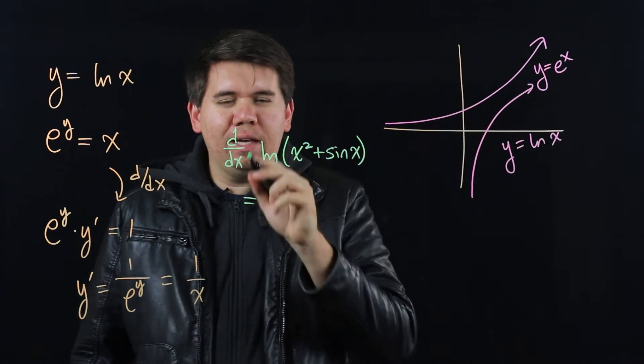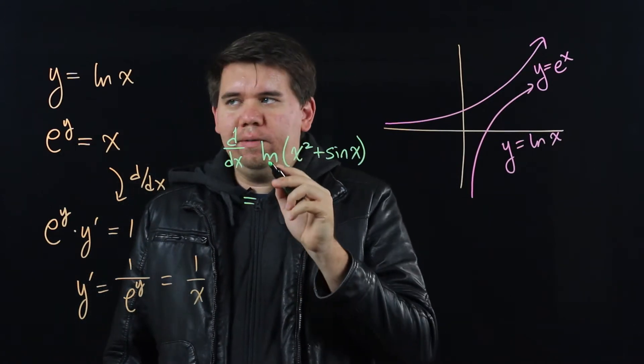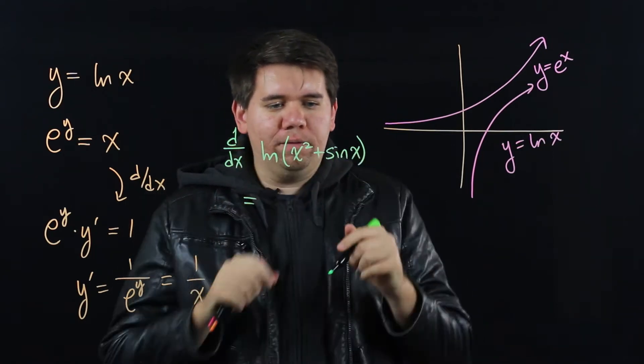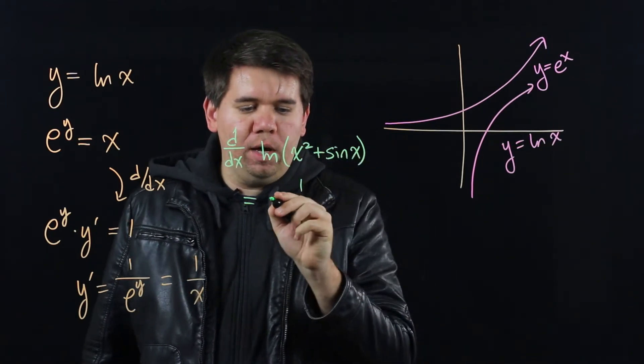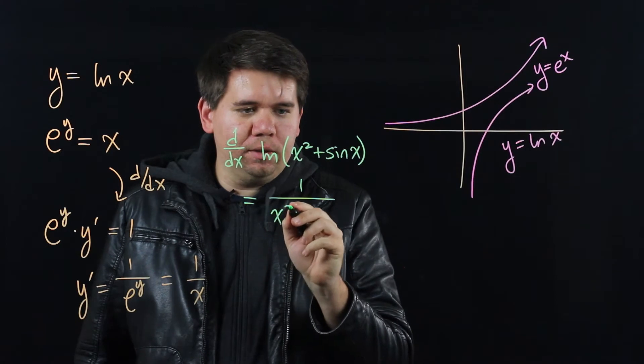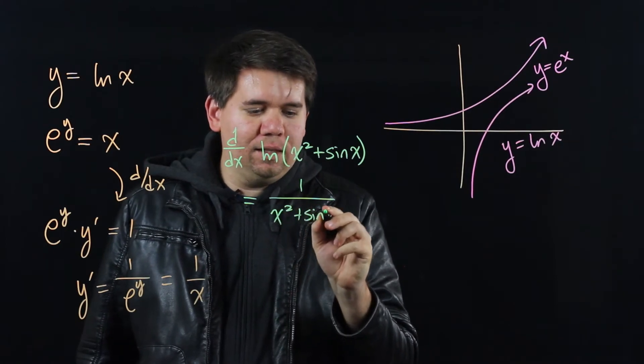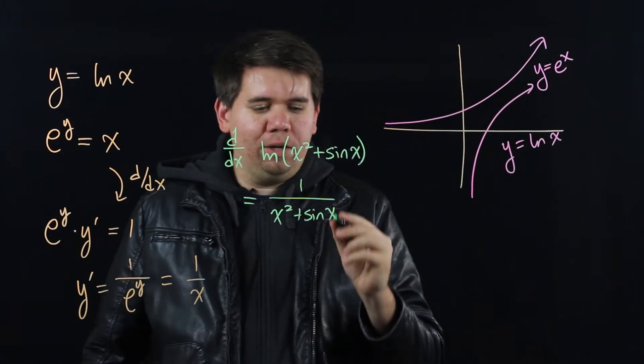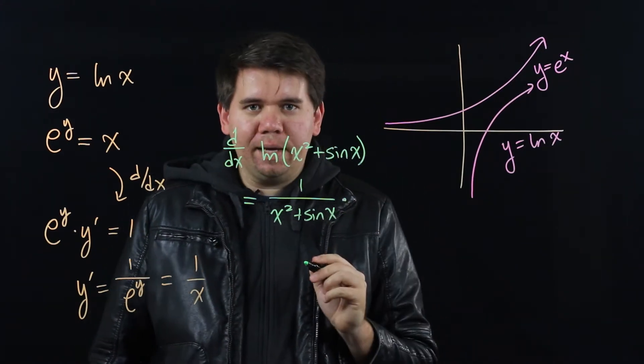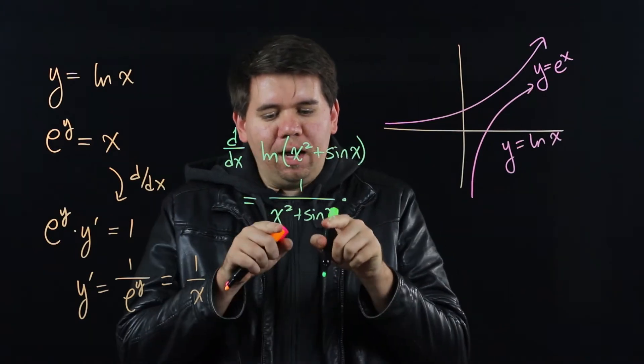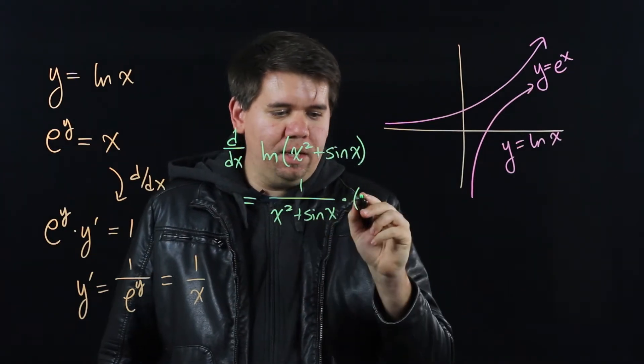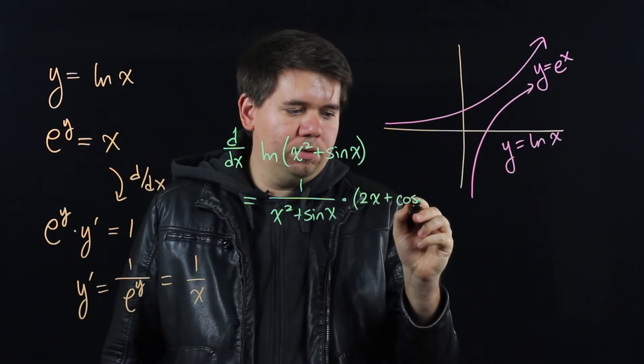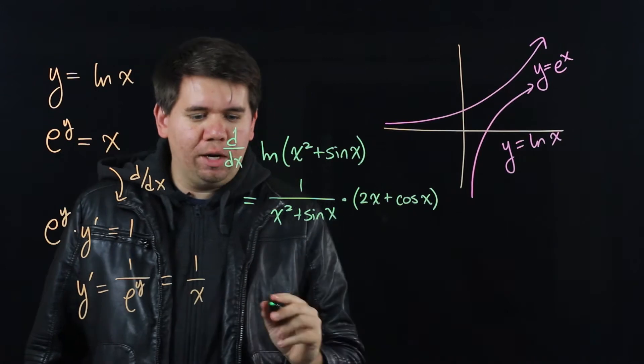We'll first take the derivative of the outermost function. The derivative of natural log of x is just 1 over x. In this case, the derivative of natural log of our function will be just 1 over that function. We're leaving the inside the same, it playing the role of x here. But then, to complete the chain rule, we need to multiply it by the derivative of the inside function. That derivative being 2x plus cosine of x.